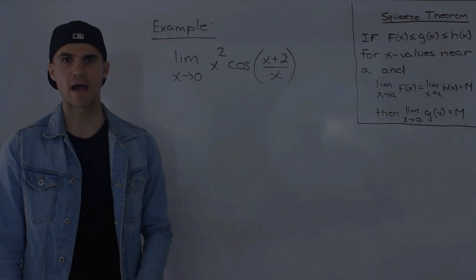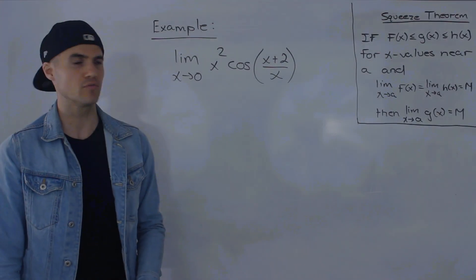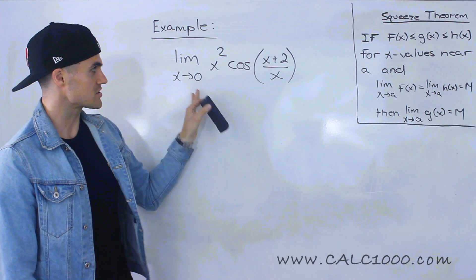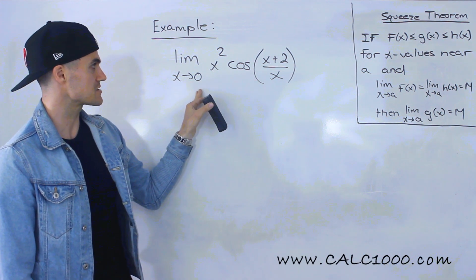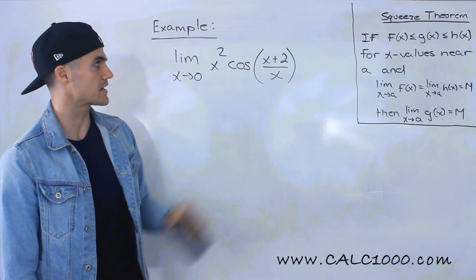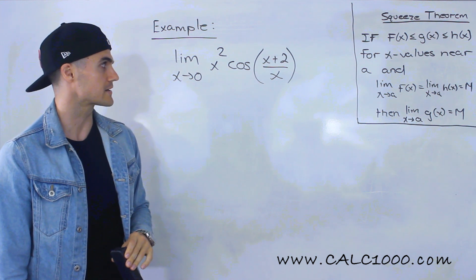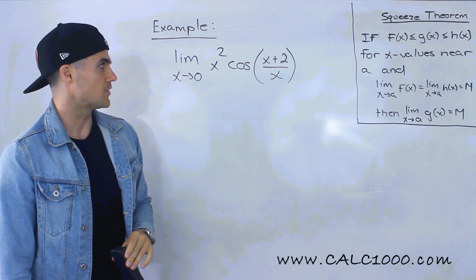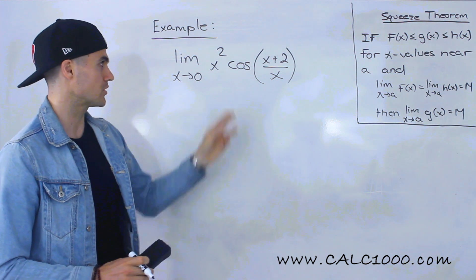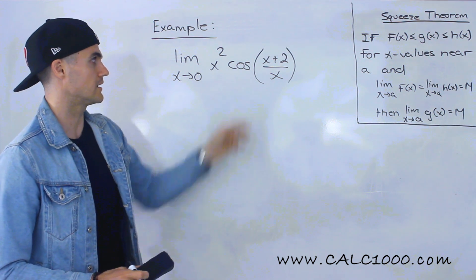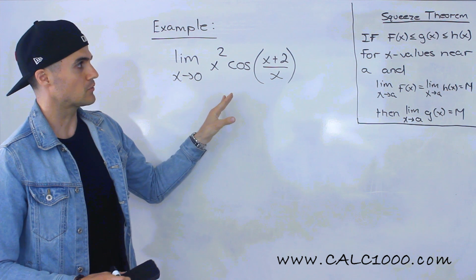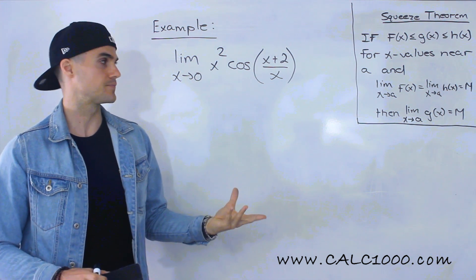Welcome back. Patrick here, and moving on to the next video, we've got to solve this limit. We've got the limit as x approaches 0 of x squared times cos(x + 2) all over x. Notice this is a pretty complex function — we're mixing a parabola and a trig function. To solve this limit, we're actually going to be using the squeeze theorem.